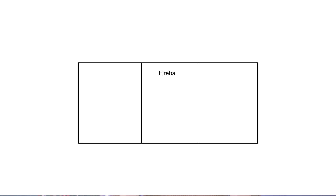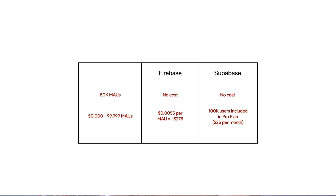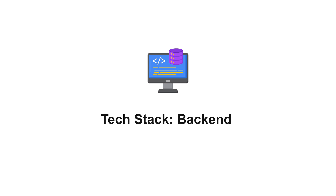I looked at both Firebase and Supabase, and both have support in FlutterFlow, which was ideal. Cost-wise, for 50k monthly active users they're both free on the free plan. Once I reach 50k, I may want to switch to Supabase if Firebase pricing doesn't reduce — for 50k more users on Firebase I'd need to pay $0.0055 per user, which comes to around $500. For Supabase, I just switch to the Pro plan at $25 and get 100k monthly active users included. Honestly, 50k is really far away for me, so I'm settling with Firebase authentication for now.